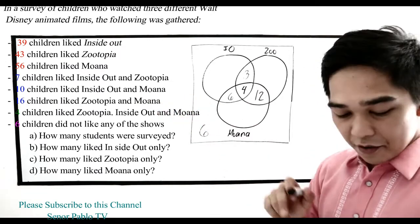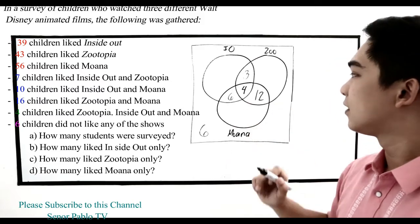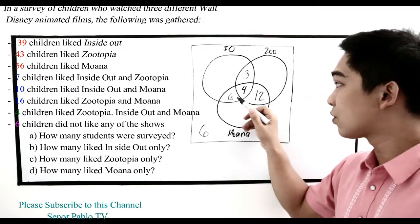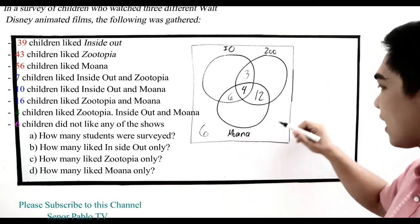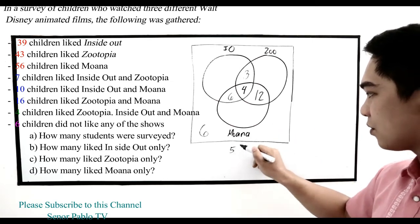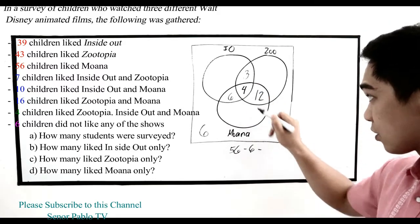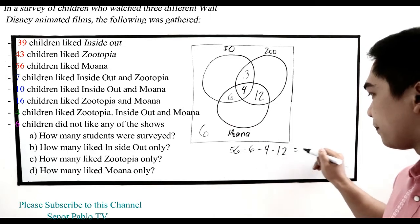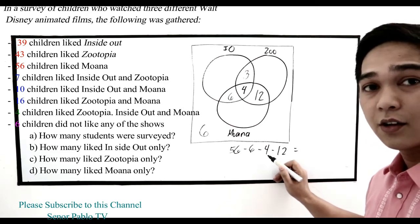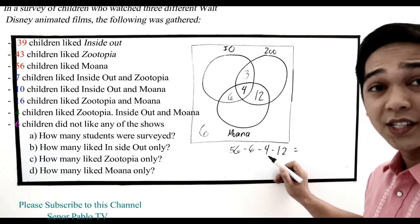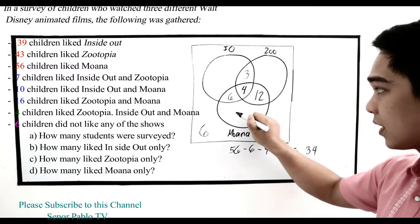Next, 56 children like Moana. From 56, we subtract all the intersection values for Moana: minus 6, minus 4, minus 12. So 56 minus 6 minus 4 minus 12 equals 34. We write 34 in the Moana-only region.